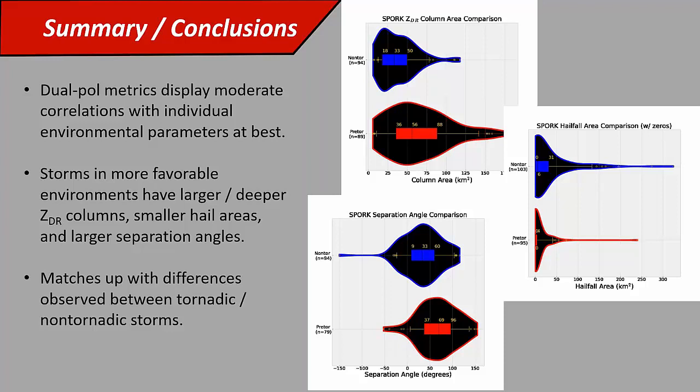For interesting future work, there's another student here at UNL who's looking at tornadic and non-tornadic storms in the same environment and doing those comparisons to see how much of that information is just based on storm differences. It would also be interesting to look at this in a larger sample and stratify some of those correlations by individual variables, like look at all low-CAPE environments and see how shear influences some of these metrics. That's pretty much what I've got and I'll take any questions now.